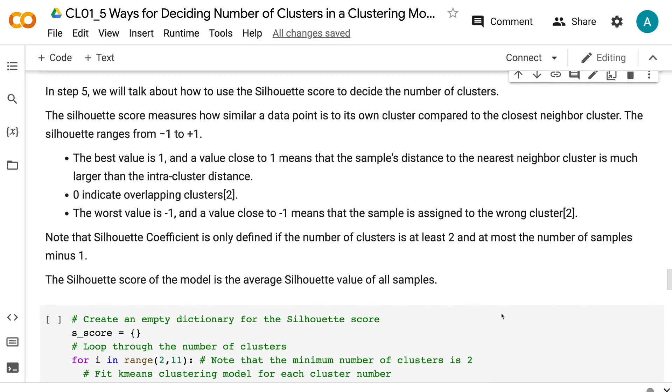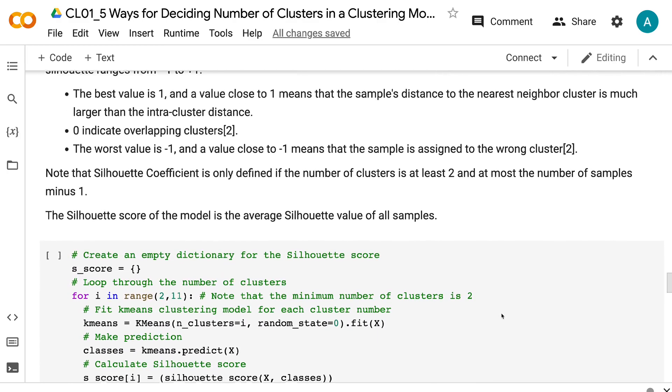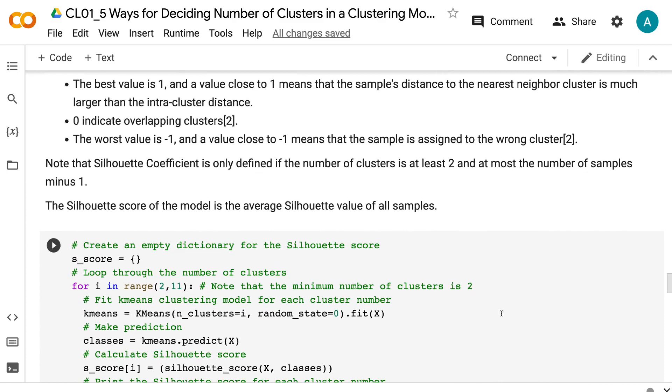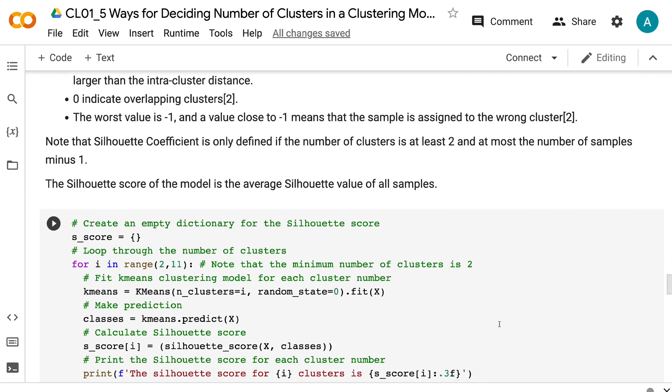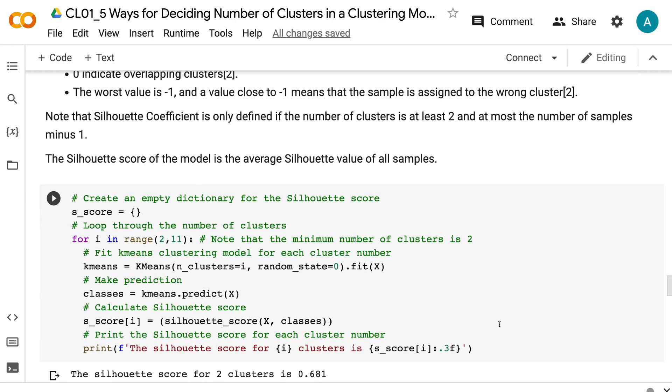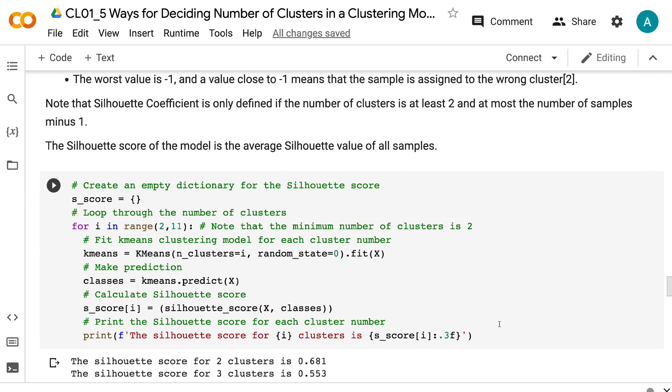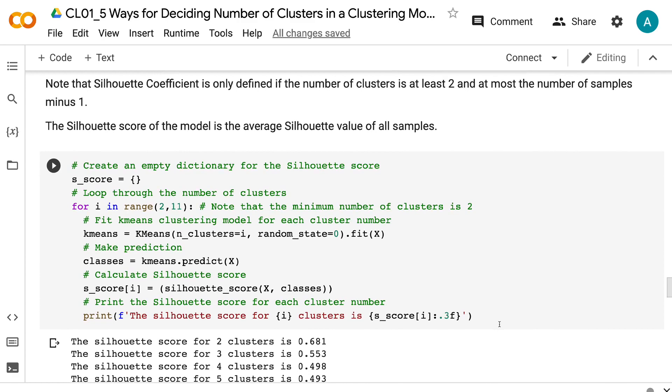The best value is 1. A value close to 1 means that the sample's distance to the nearest neighbor cluster is much larger than the intra-cluster distance. 0 indicates overlapping clusters. The worst value is negative 1. A value close to negative 1 means that the sample is assigned to the wrong cluster. Note that silhouette coefficient is only defined if the number of clusters is at least 2 and at most the number of samples minus 1.